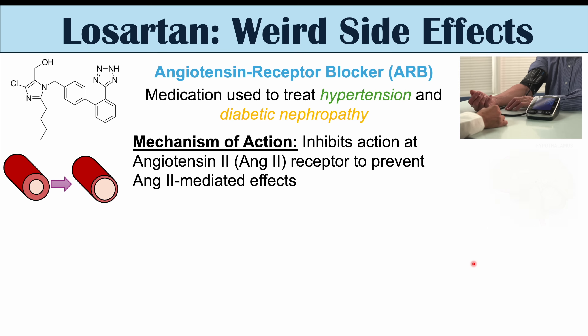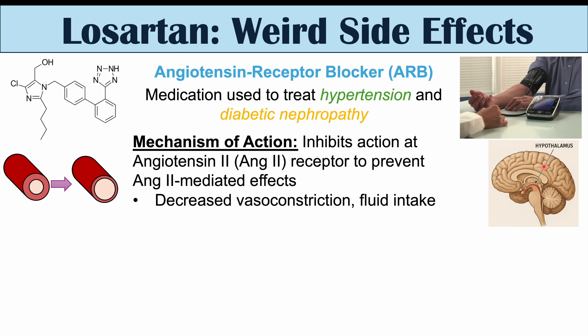Some other effects of angiotensin 2 include acting on the brain to increase thirst, leading to more fluid intake, and acting on the adrenal glands to release aldosterone, which can increase blood pressure and cause the kidneys to excrete potassium. Because Losartan blocks angiotensin 2's effects, we get the opposite: decreased vasoconstriction, decreased fluid intake, and decreased blood pressure.